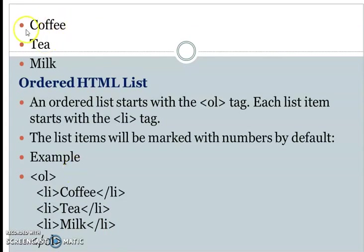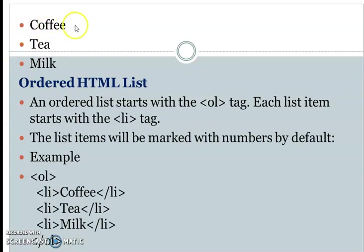Click to find the output. By default, we have a bullet in black color. The output shows coffee, tea, and milk as a list. The list is defined by the UL tag, and you can change the list style. By default, we have a bullet in black color.